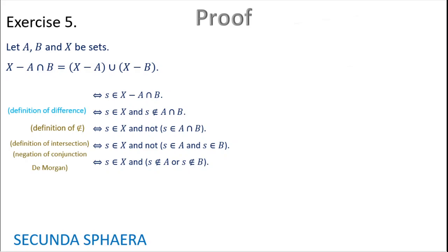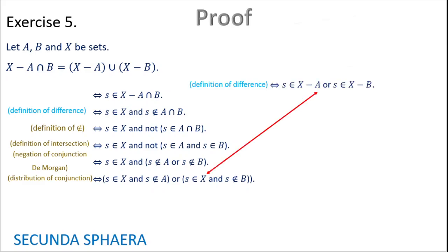In this case we can distribute the AND over the OR. And at this point we are nearly finishing, because right now we can just use the definition of difference again. So we have s is in X without A, or s is in X without B. And also we have the definition of union.